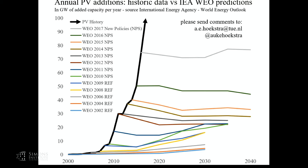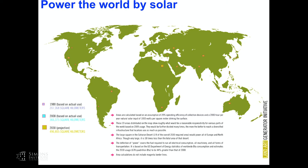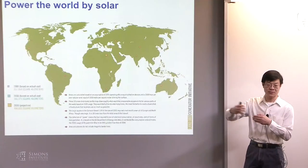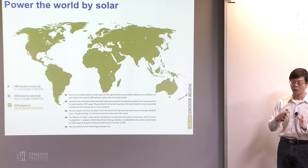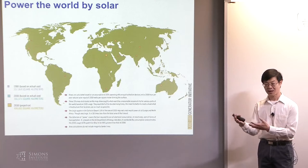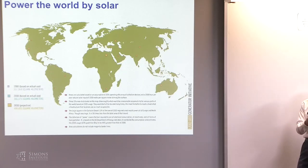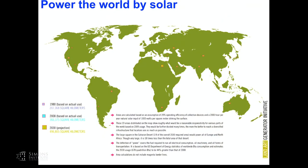Someone has done calculations using actual energy consumption in 2008 and made assumptions about energy consumption by 2030. If we just capture solar energy and supply all the energy needs — there's a lot of engineering that needs to happen — suppose we can do that, how much area would it cover? This is supposedly to scale. The point is there's way more renewable energy in nature than we will ever need.